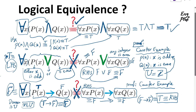In summary, when distributing the universal quantifier over logical operators, we must be very careful. As shown in these three examples, it only works for conjunction (AND). It does not work for disjunction (OR) or for the conditional operator.